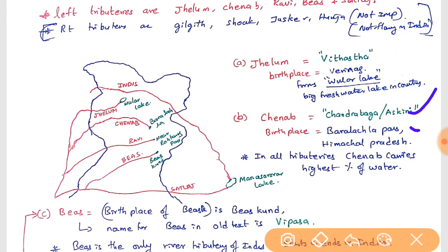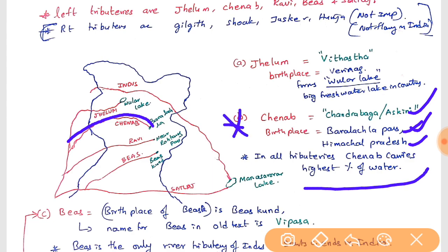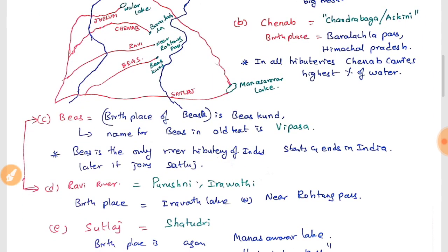Chenab's birthplace is Baralacha Pass in Himachal Pradesh. Among all the tributaries of Indus, Chenab carries the highest percentage of water — an important fact to remember.